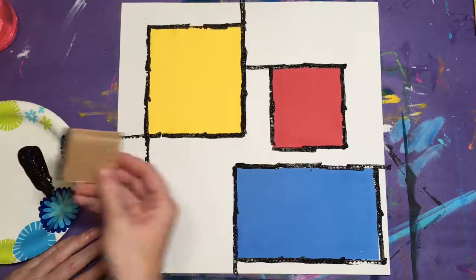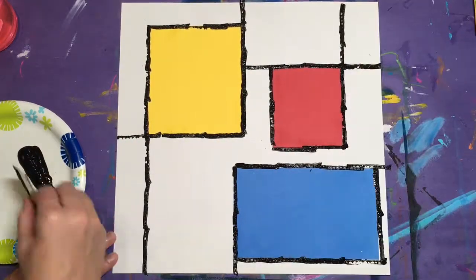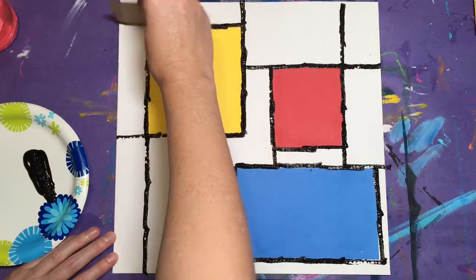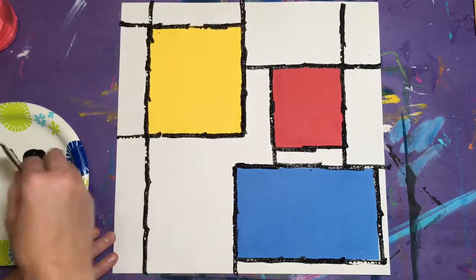Push down and pick it up. Keep going like this, making more squares and rectangles in the white spaces of your paper until you've completed your project.